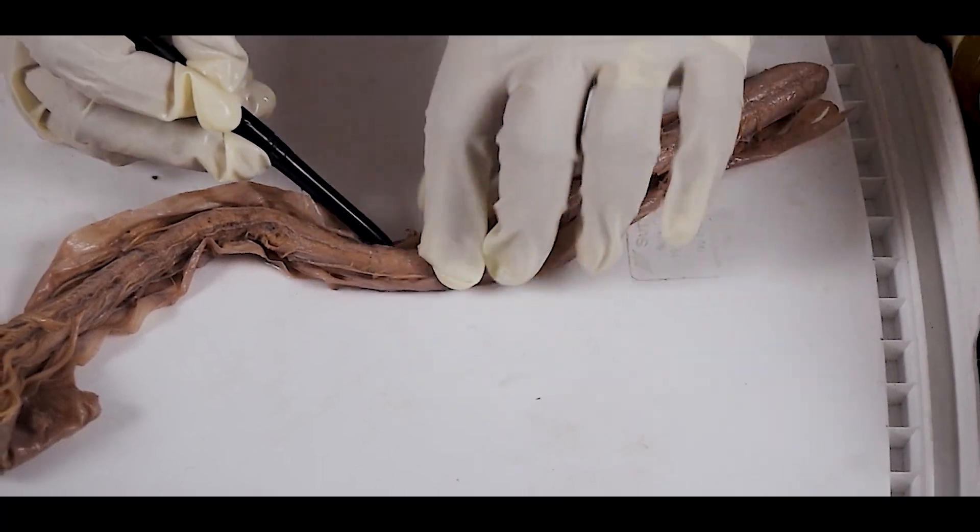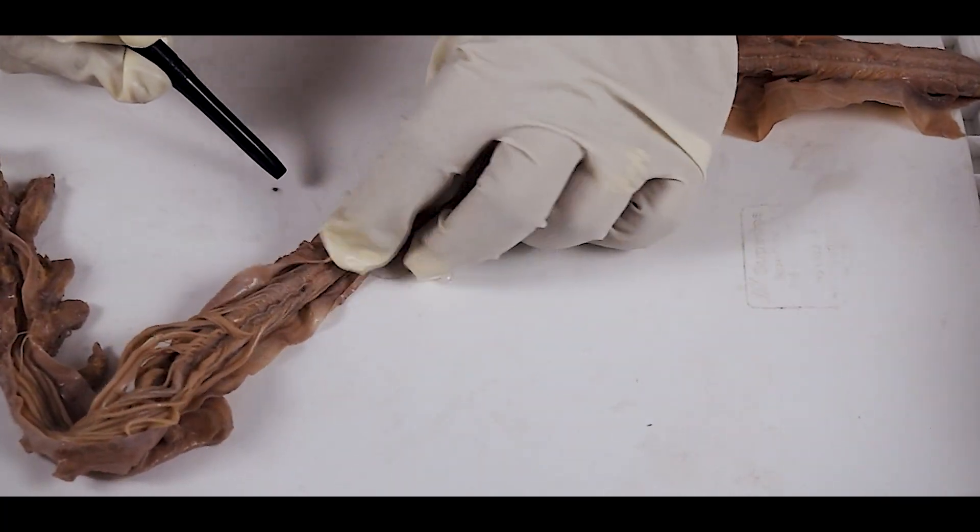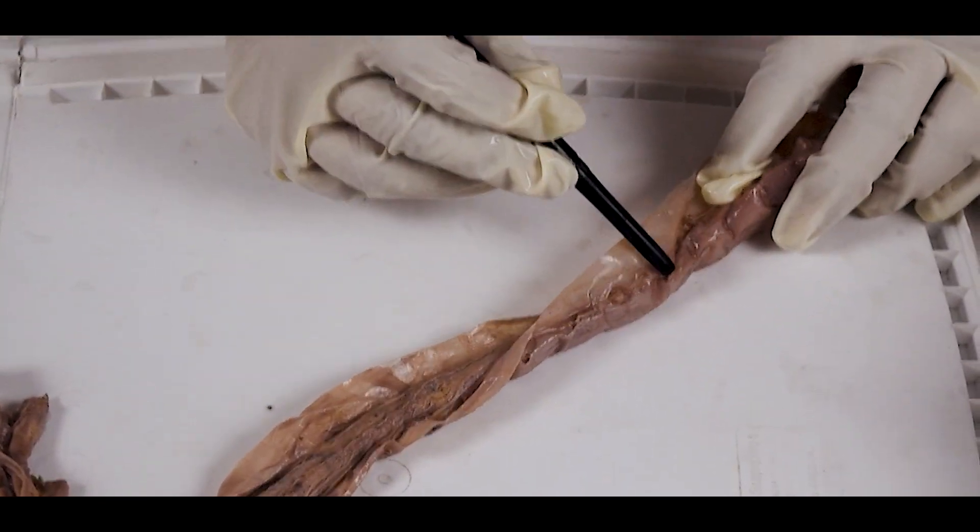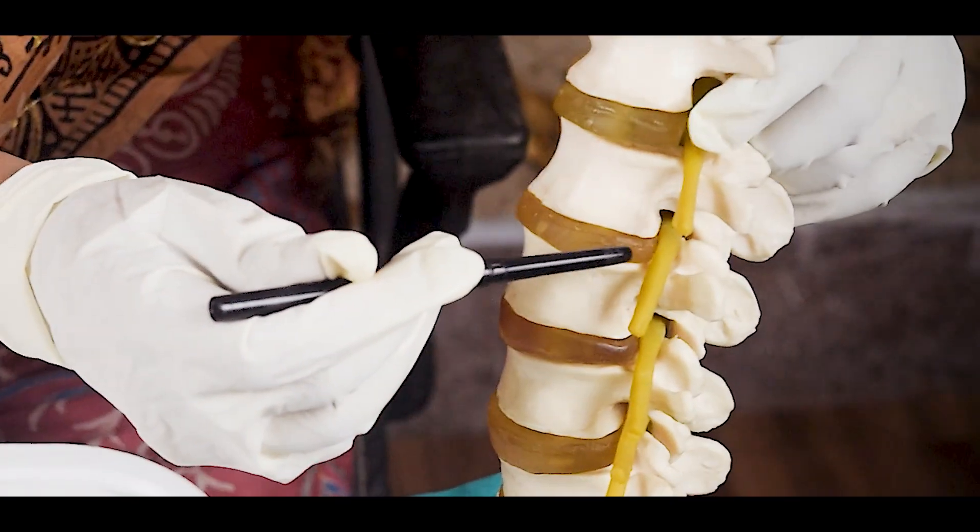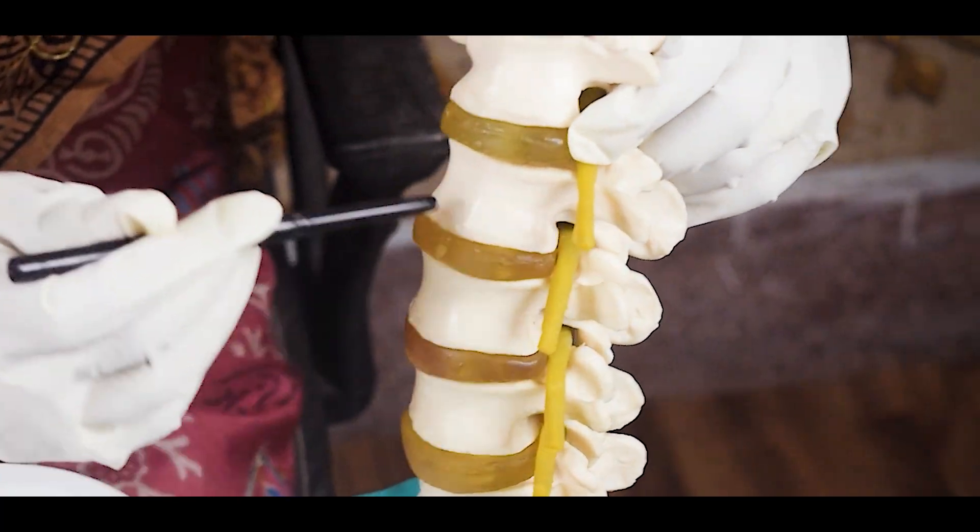And this rootlet of the nerve, they pierce and ultimately form a thick nerve. You will see this is the thick nerve when it comes out from the dura and then it comes out through the intervertebral foramen between the two vertebrae.